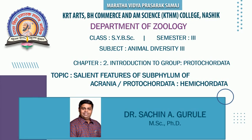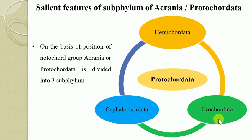In the previous video of subject Animal Diversity 3rd, we have started chapter number 2. The name of the chapter is Introduction to Group Protochordate, and in that lecture we have already learned the salient features of group Urcranata, which is also referred to as the Protochordata. Now in this lecture, we are going to learn the classification of the protocordates and the subphyla of the Urcranata.